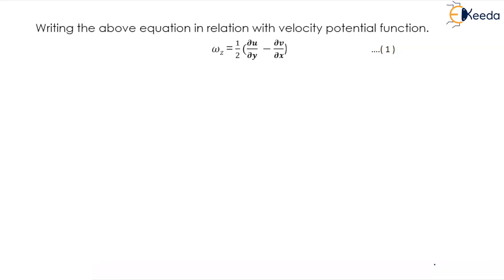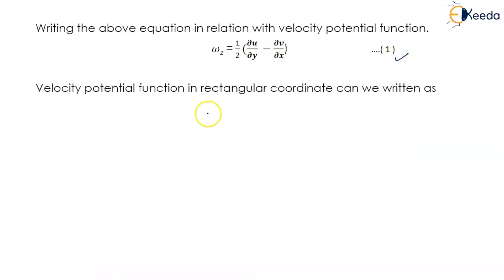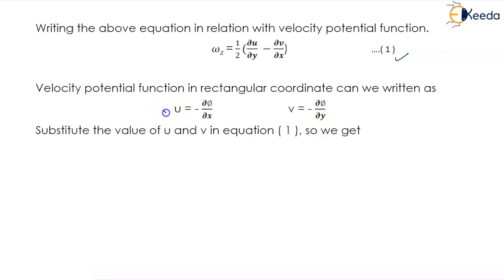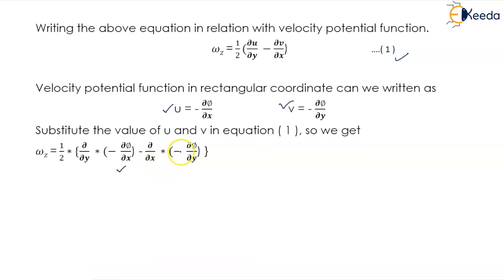Writing the above equation in relation with velocity potential function, we get ω_z = (1/2)(∂u/∂y − ∂v/∂x), and this is equation number 1. The velocity potential function in rectangular coordinates gives u = −∂φ/∂x and v = −∂φ/∂y. Substituting these values into equation 1, we get ω_z = (1/2)[∂/∂y(−∂φ/∂x) − ∂/∂x(−∂φ/∂y)], which simplifies to (1/2)(−∂²φ/∂y∂x + ∂²φ/∂x∂y).